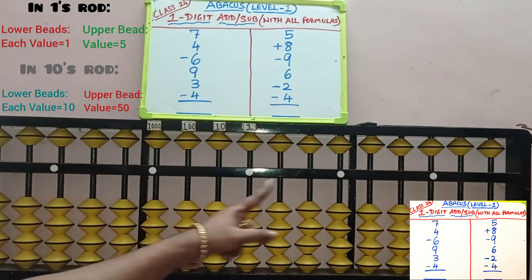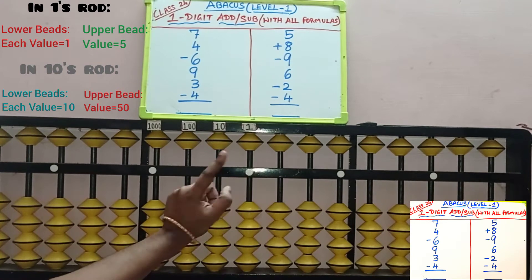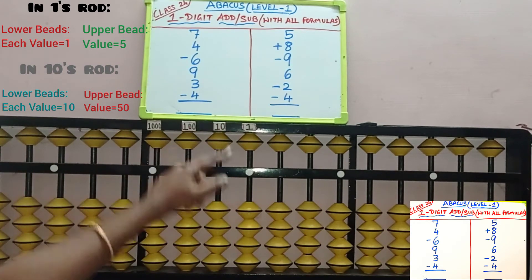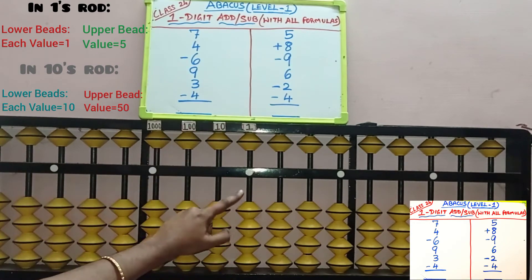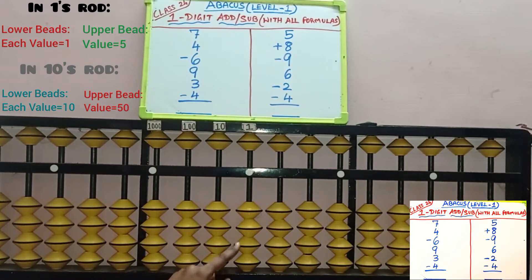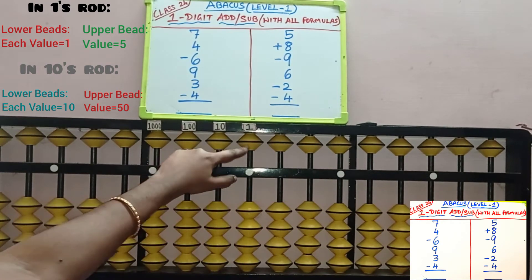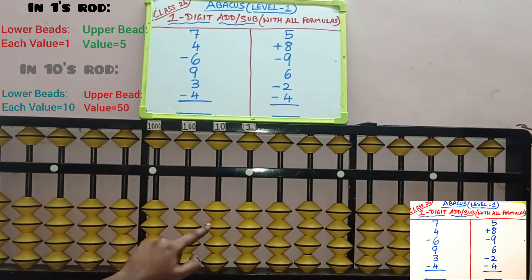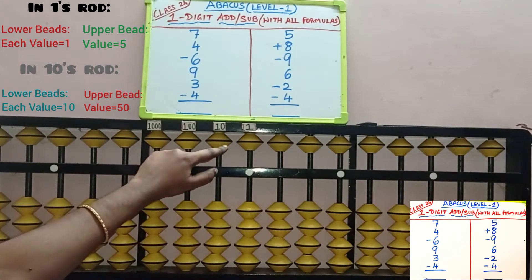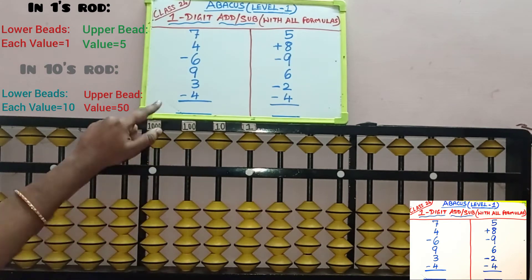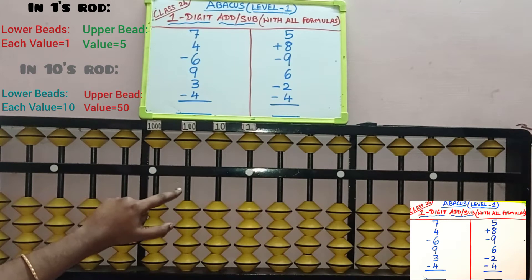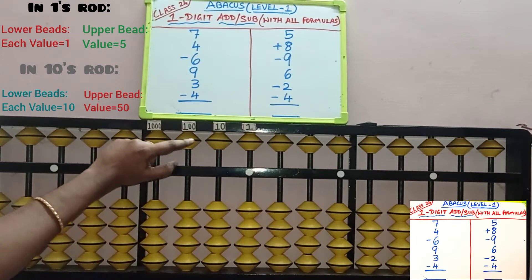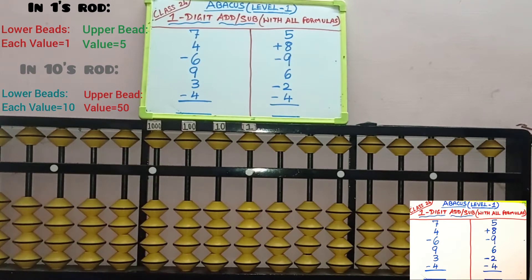From 5 points, the middle point is the 1 slot, 10 slot, 100, 1000, etc. In the 1 slot, its value is 1, 2, 3, 4, and the upper bead is 5. In the 10 slot, it is 10, 20, 30, 40, and its value is 50. In the 100 slot, each value is 100 — so 100, 200, 300, 400, and its value is 500.